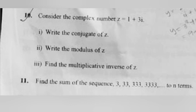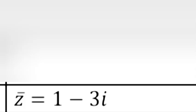Problem 10: Consider the complex number z = 1 + 3i. Part i: Write the conjugate of z. Part ii: Write the modulus of z. Part iii: Find the multiplicative inverse of z.